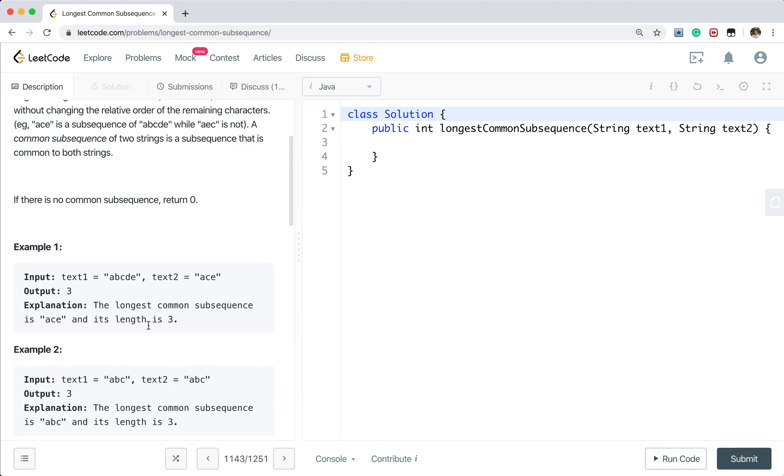Let's see this example. We will see ACE is these two strings common subsequence and it is the longest, so we return 3.